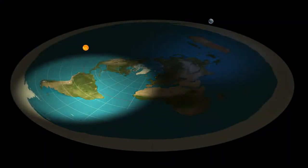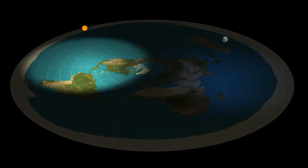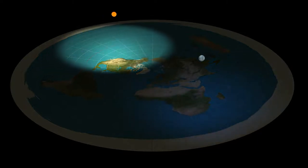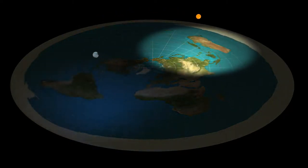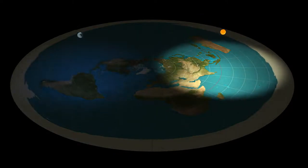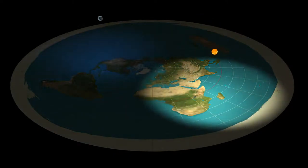The Flat Earth model is based on an azimuthal equidistant projection map centered on the North Pole, with the Sun and Moon orbiting at about 5,000 km altitude. This is of course a total distortion of all we know about our surroundings.